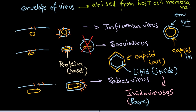Usually the membrane coats the capsomere from the outside, and this membrane helps the virus fuse and gain entry inside the host cell that it is going to infect.